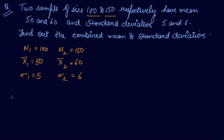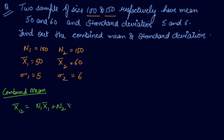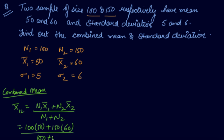We need to find the combined mean as well as the combined standard deviation. The combined mean formula is: N1 times x-bar 1 plus N2 times x-bar 2, divided by N1 plus N2. So: 100 times 50 plus 150 times 60, divided by 250, which gives 5000 plus 9000 equals 14000 divided by 250, giving a combined mean of 56.